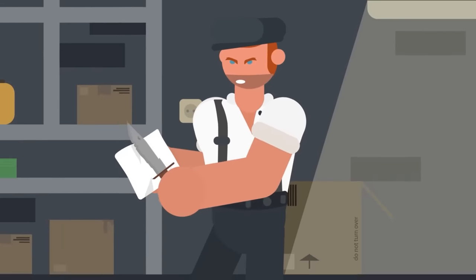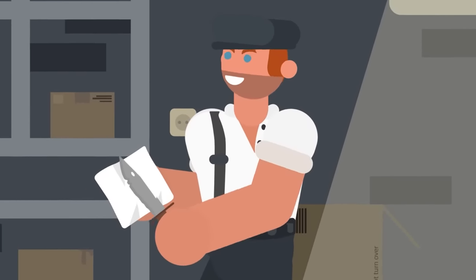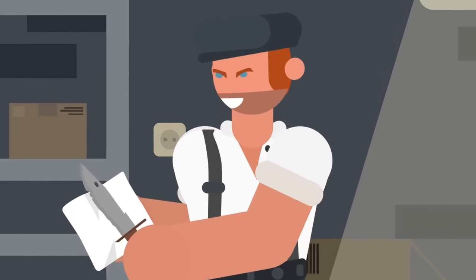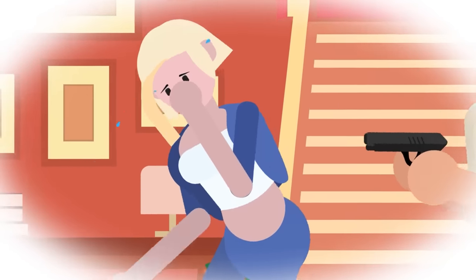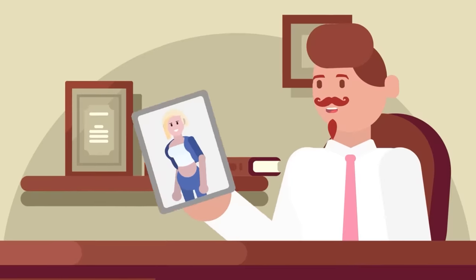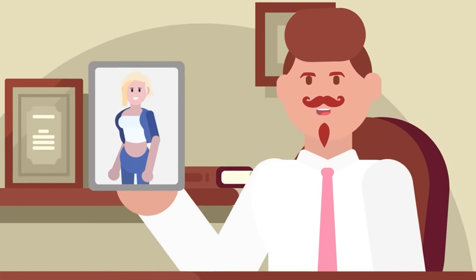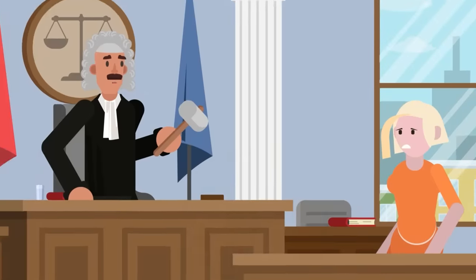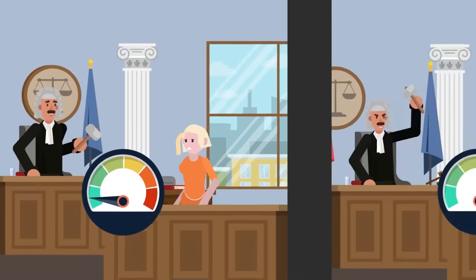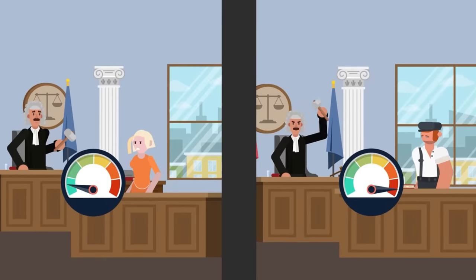Capital punishment is typically reserved for serial killers or sociopaths who murder or harm many victims. In the case of most females, the murder is the only crime committed. Again, we're not saying that one murder shouldn't constitute punishment, but for both males and females, it's less likely for someone to receive the death penalty for a single murder.